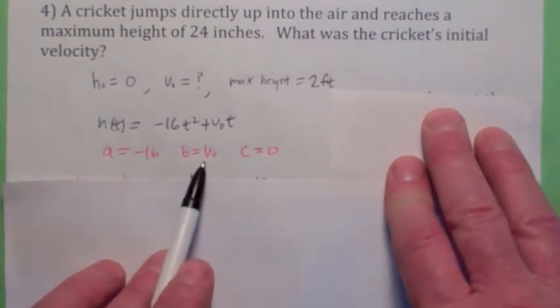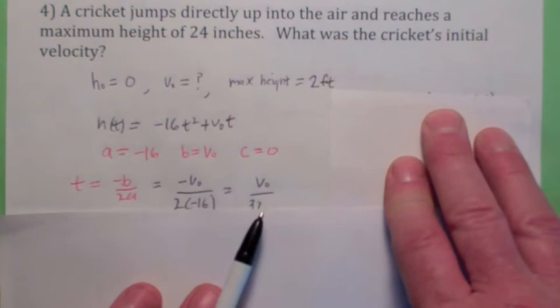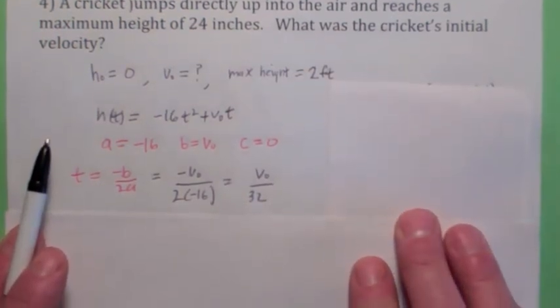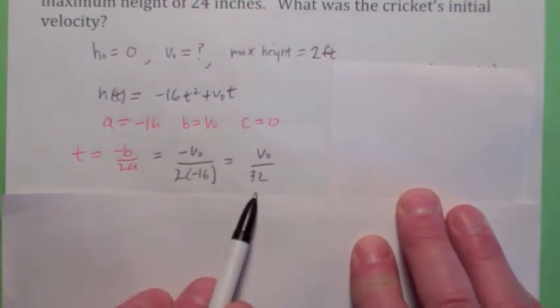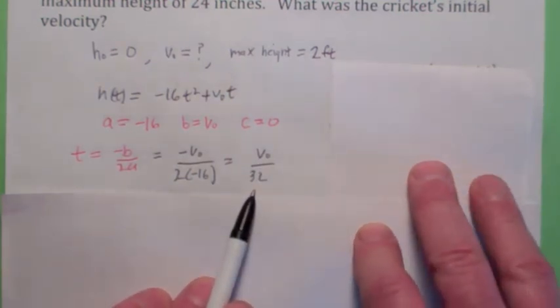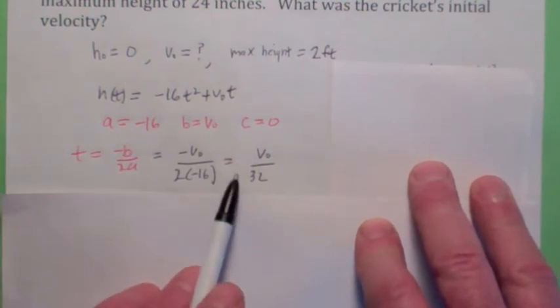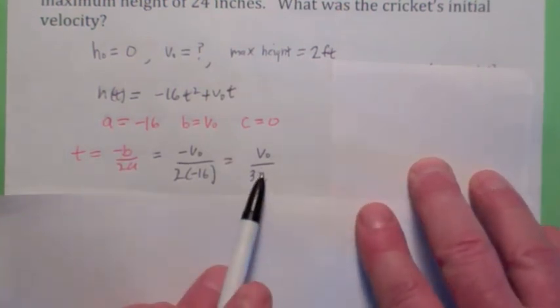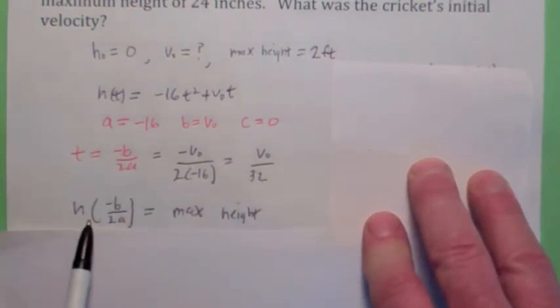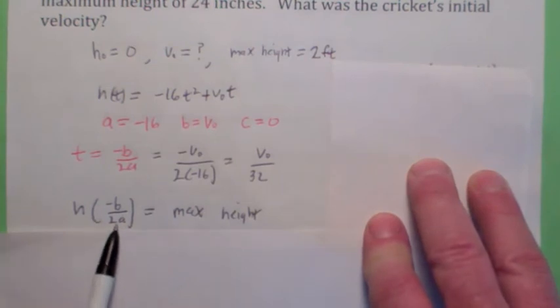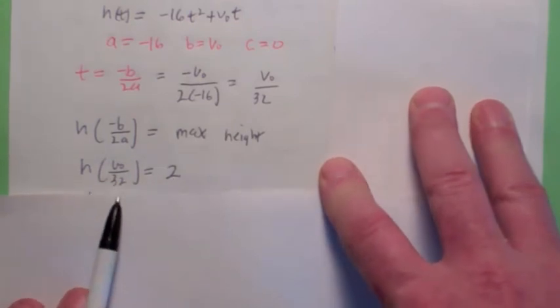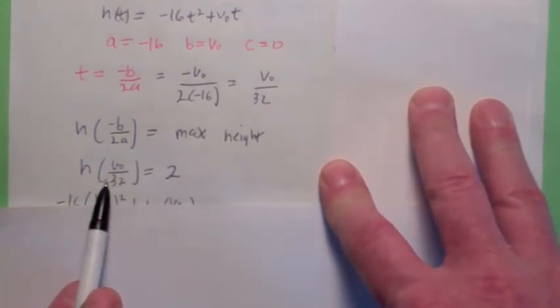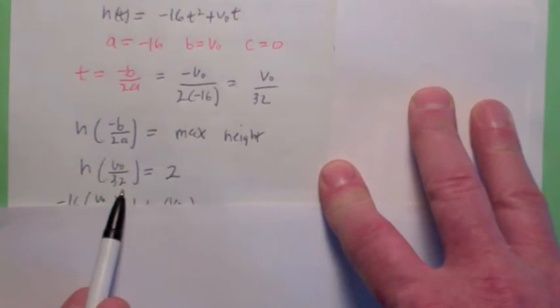Well, a is negative 16, b is v₀, and c is zero. The time that it reaches the maximum height is negative b over 2a, which turns out to be v₀ over 32. What we want to do here is find h of this number, right? In terms of the vertex, this is the t coordinate of the vertex. We want to find h of this. So you know that h of this is the maximum height. And we also know that that's equal to 2. So we're going to use this fact. It says the maximum height is 2. So h of v₀ over 32 has to equal 2.